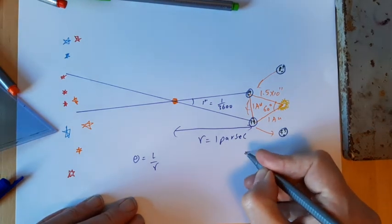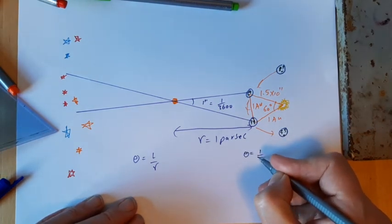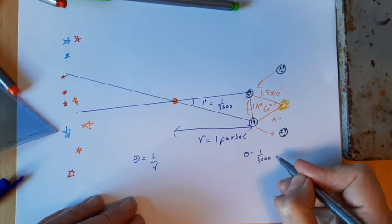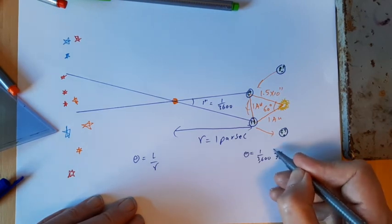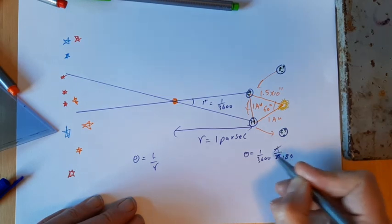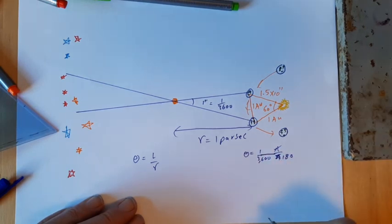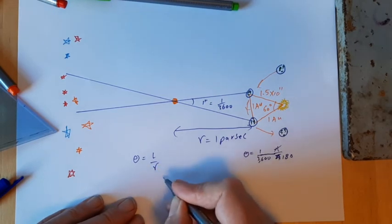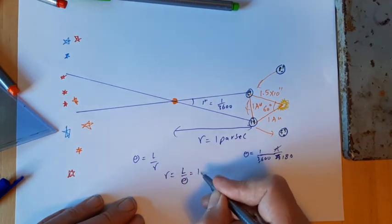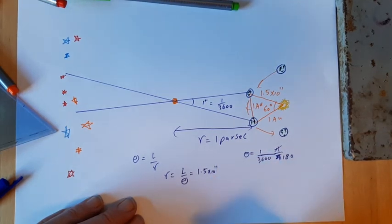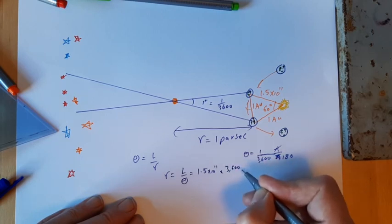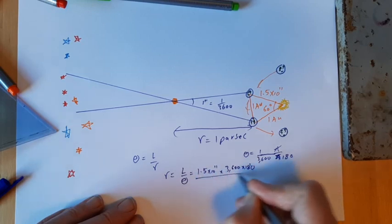Just like before, theta is 1/3,600 of a degree, and we've got to multiply by π/180 to convert to radians. R is going to be equal to L over theta, so it's 1.5 × 10¹¹ metres multiplied by 1 over that — so 3,600 × 180, all over π.